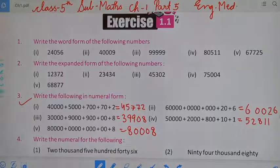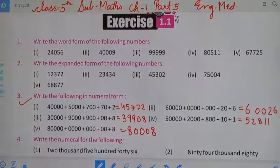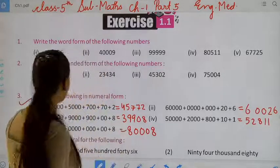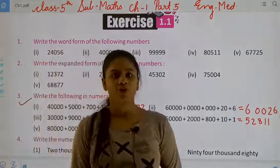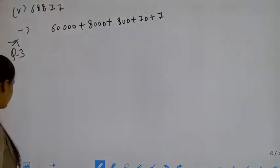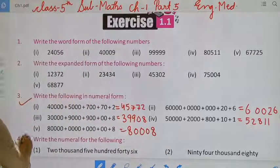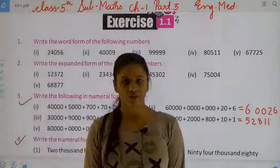Then we will move to the next question. You have to do this question in your maths notebook as well as in your book. Question 3 — write the following in the numeral form — you have to do in your maths notebook as well as in your book. Complete question number one and question number two in your maths notebook. In our next video, we will continue from question number four. That's all for today. Thank you, class.